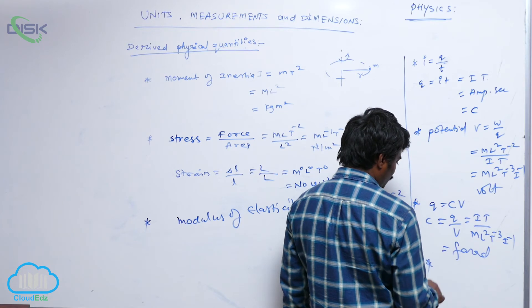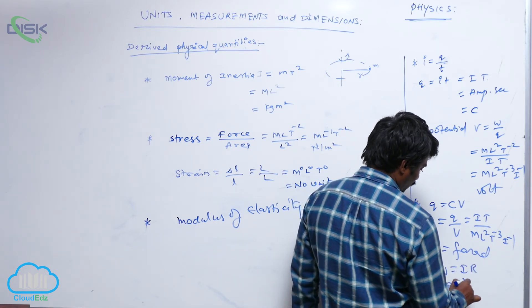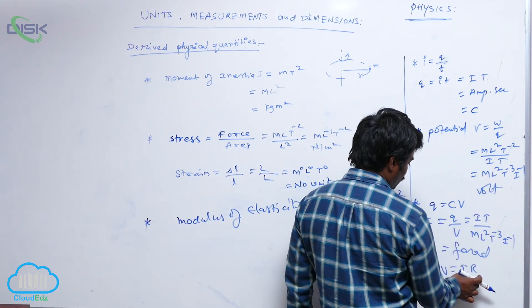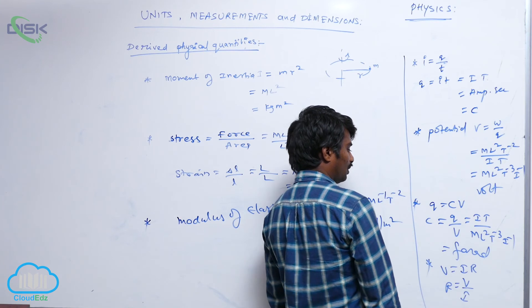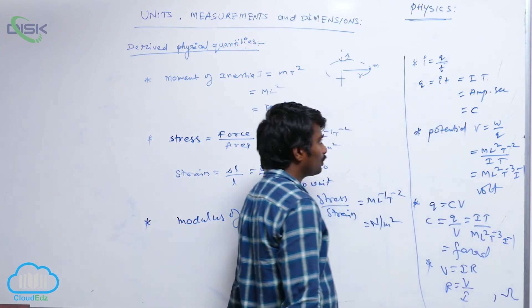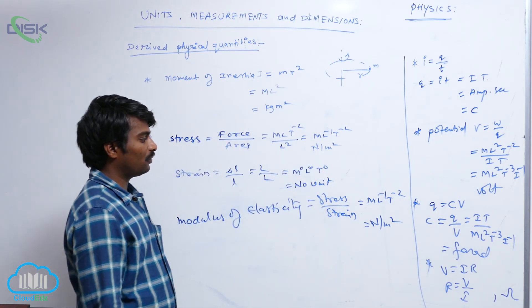Now resistance. V equal to i r, so r is equal to v by i. Potential dimensional formula you know, substitute here and solve for it, and its unit is SI unit is ohm. So in this way, we are going to deal with different physical quantities.